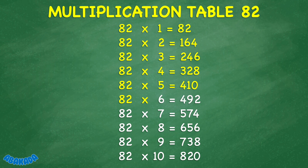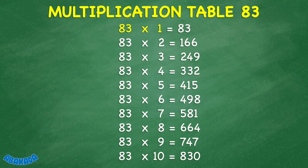82 times 6 equals 492. 82 times 7 equals 574. 82 times 8 equals 656. 82 times 9 equals 738. 82 times 10 equals 820. 83 times 1 equals 83. 83 times 2 equals 166. 83 times 3 equals 249.